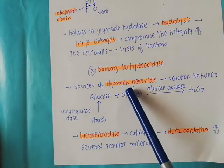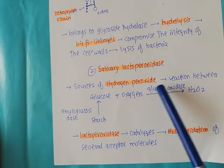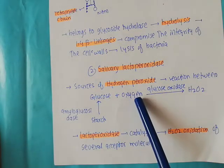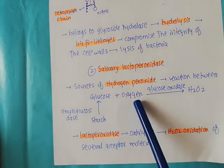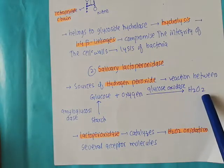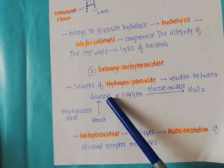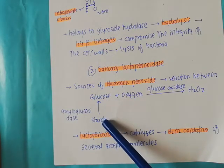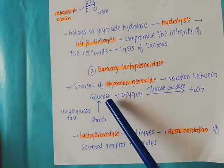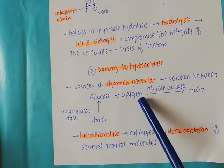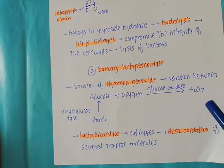The sources of hydrogen peroxide in saliva come from a reaction between glucose and oxygen in the presence of the enzyme glucose oxidase. This reaction produces hydrogen peroxide in the saliva. This glucose, as mentioned before, comes from starch — starch is hydrolyzed by alpha amylase into di- and trisaccharides, and then amyloglucosidase converts those into glucose. Oxygen is present in the oral cavity. So when glucose and oxygen react together, they produce hydrogen peroxide.